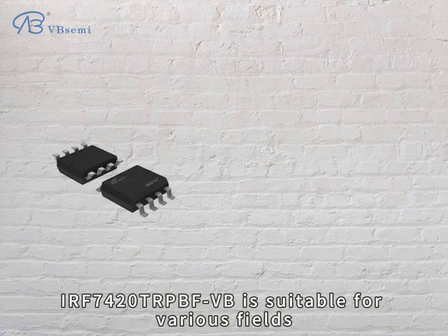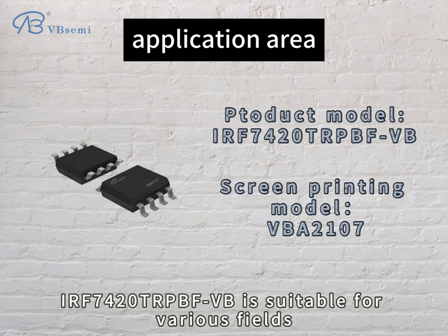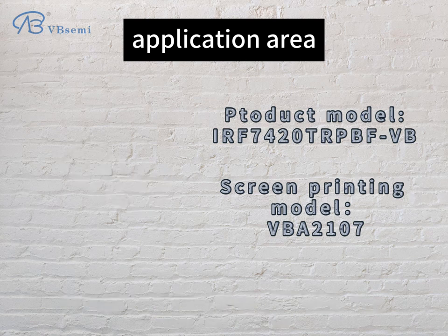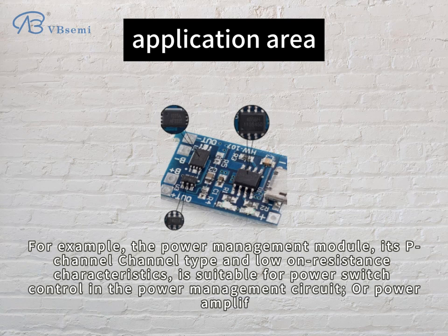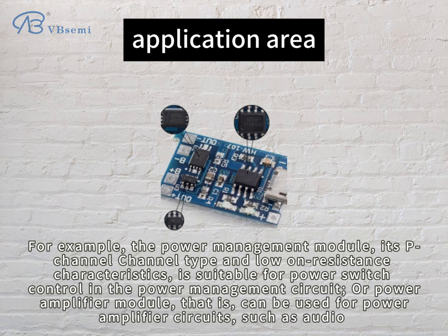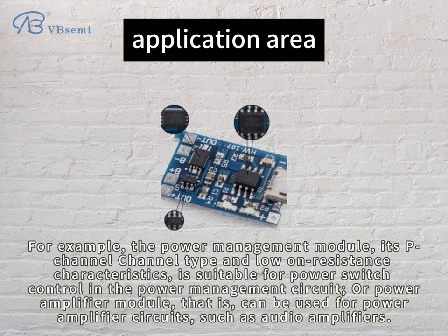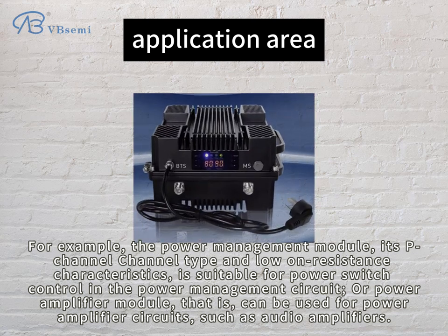Application area: the ERV-7420 TRPBFVB is suitable for various fields. For example, the Power Management Module — its p-channel type and low on-resistance characteristics make it suitable for power switch control in power management circuits. It can also be used in Power Amplifier Module applications, such as audio amplifiers.